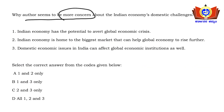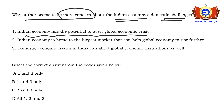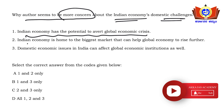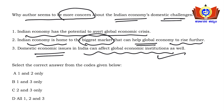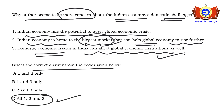Question: Why does the author seem more concerned about the Indian economy's domestic challenges? Options include: Indian economy has potential to avoid global crisis; India's economy is home to the biggest market that can help the global economy rise further; domestic economic issues in India can affect global economic institutions. All three statements are supported by the passage, so the correct answer is all of options 1, 2, and 3.